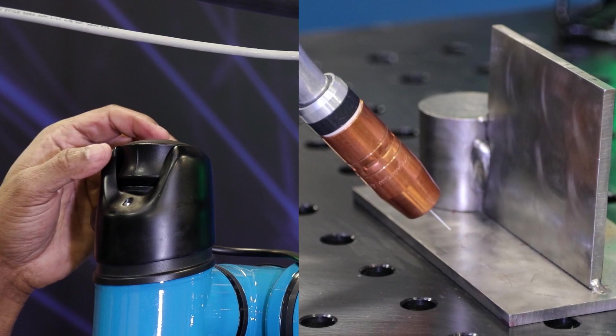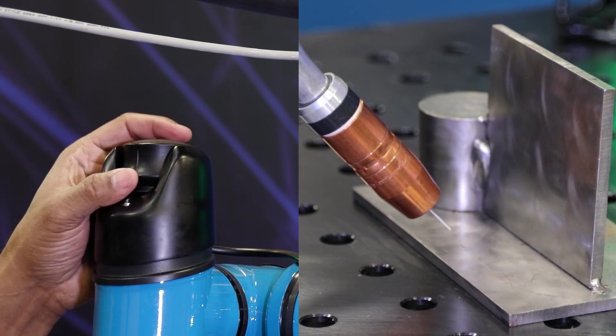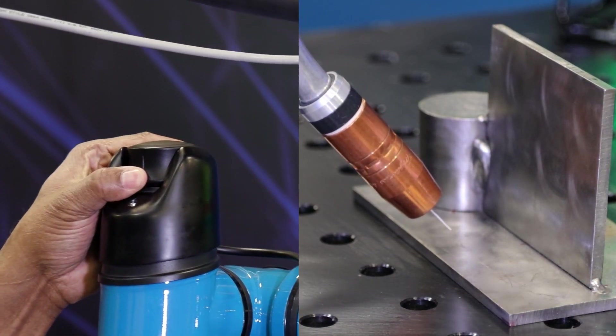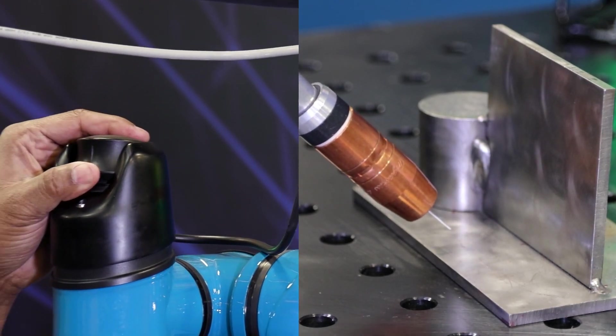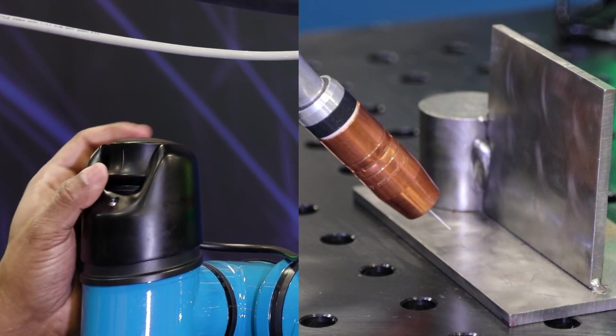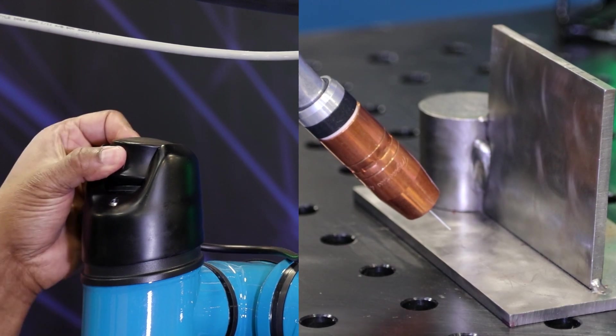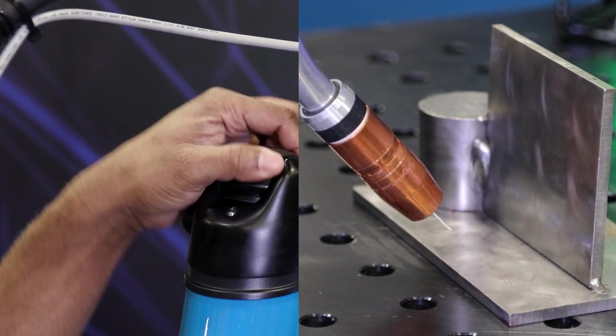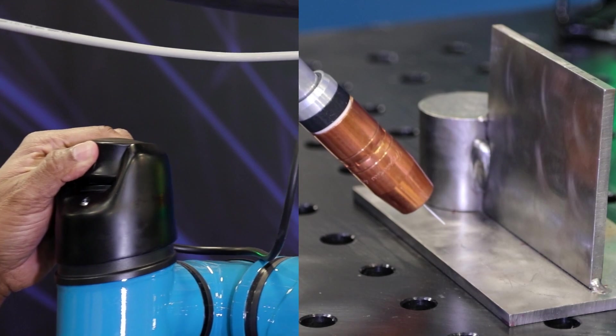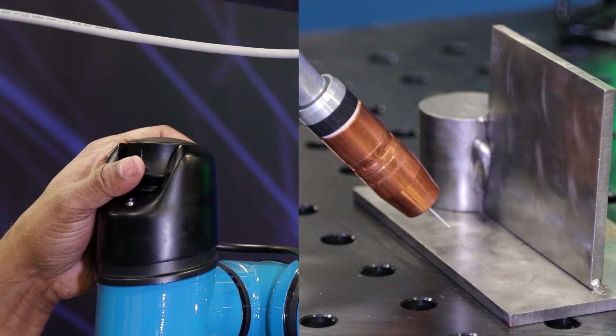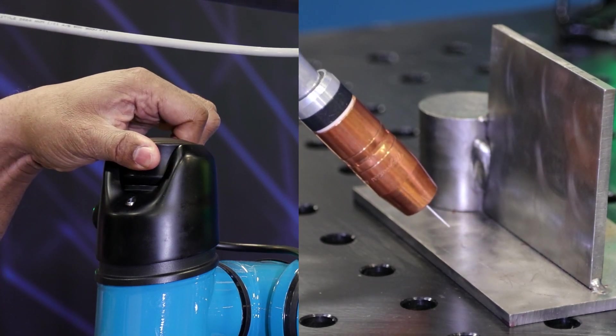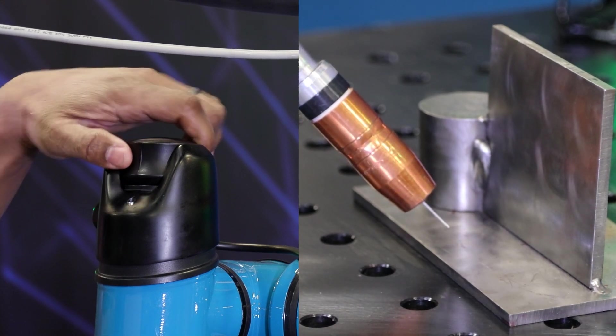The AccuGuide allows for yaw, pitch, and roll as well. So pitch rotates the torch about the Y-axis, and we're going to use this to adjust the work angle. The roll rotates the torch about the X-axis. And if we want to adjust the push and drag angle of the weld, we have the yaw, which rotates the torch about the Z-axis.